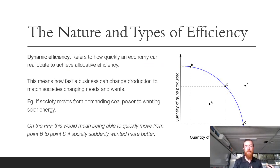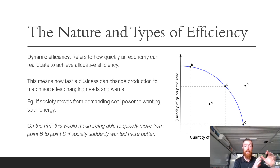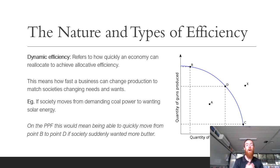Dynamic efficiency is all about how quickly an economy can reallocate to achieve allocative efficiency — how fast businesses can change their production to match society's changing needs and wants. For example, if society goes from demanding coal power to demanding solar energy, businesses being able to see that and reallocating their resources to change production is dynamically efficient. On the PPF, it would mean how quickly a business might be able to move from, say, point B to point D, because that is now the combination of resources that businesses or consumers are demanding.